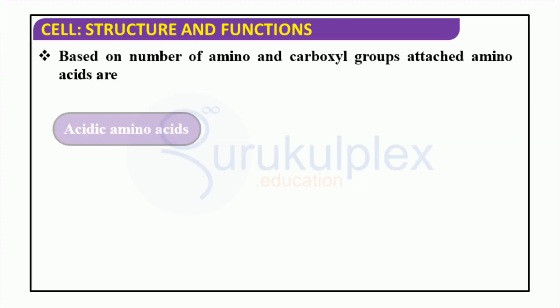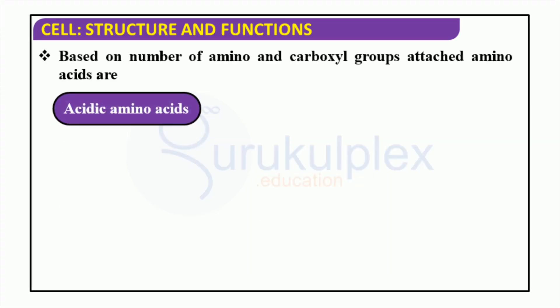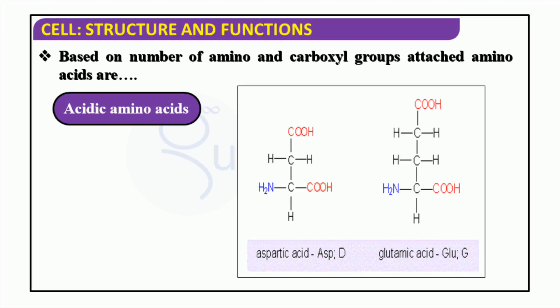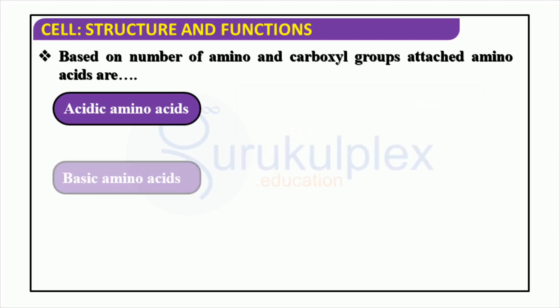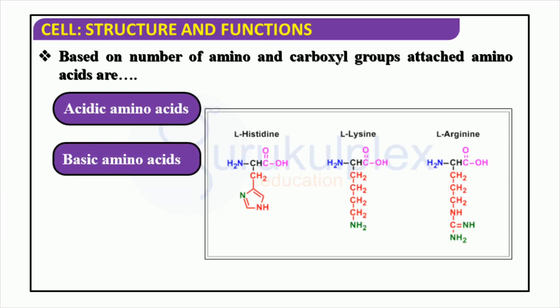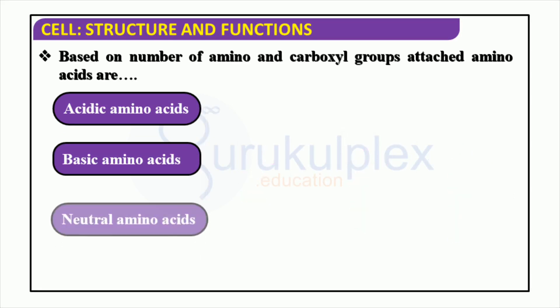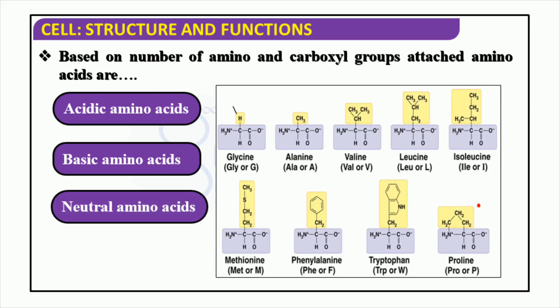Amino acids can be classified into acidic, neutral, and basic, depending on the number of amino and carboxyl groups attached. Acids include aspartic acid (ASP) and glutamic acid (GLU). Neutral amino acids include alanine (ALA) and glycine (GLY). Basic amino acids include arginine (ARG) and histidine (HIS).